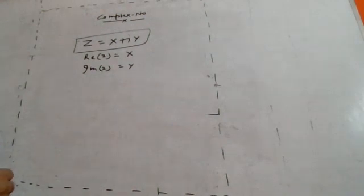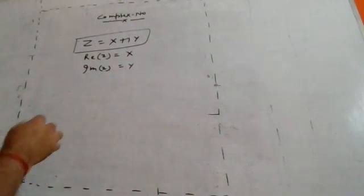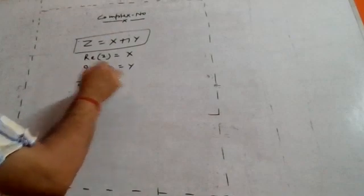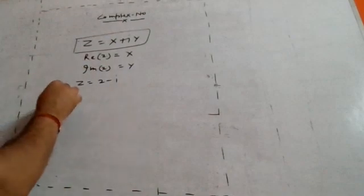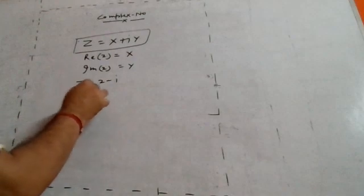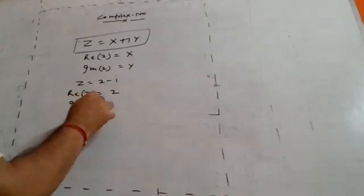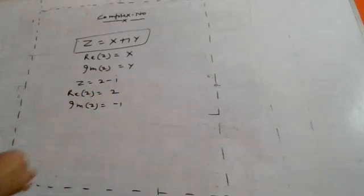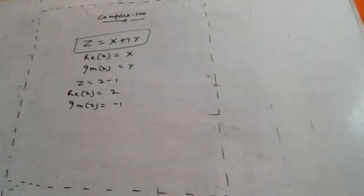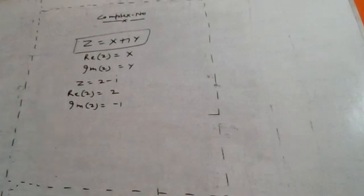This is the standard form, also called the a + ib form. For example, suppose the complex number is 2 - i. The real part of z is 2. The imaginary part is the coefficient of i, which is -1. In this way you can calculate the real part and the imaginary part of any complex number.